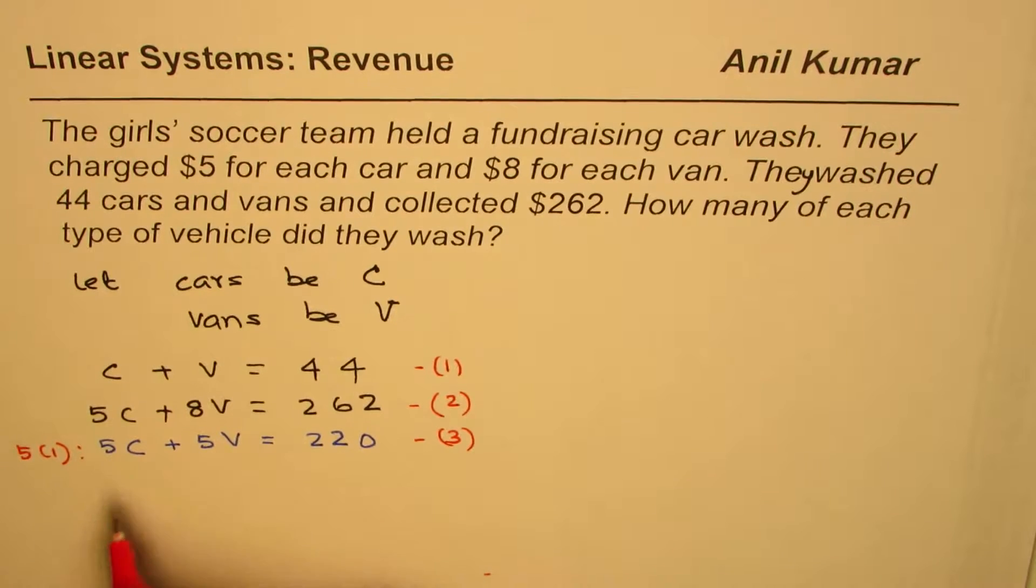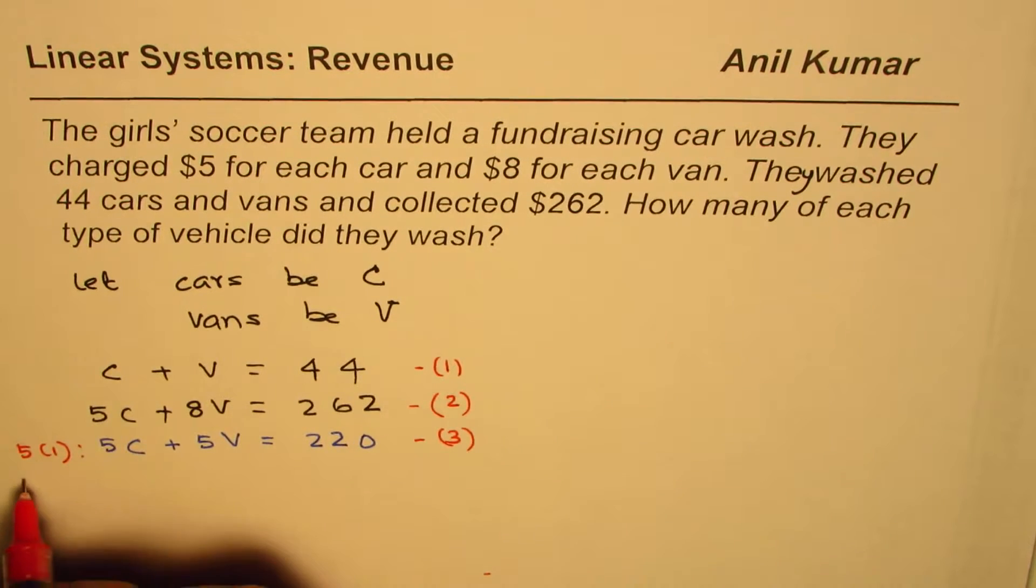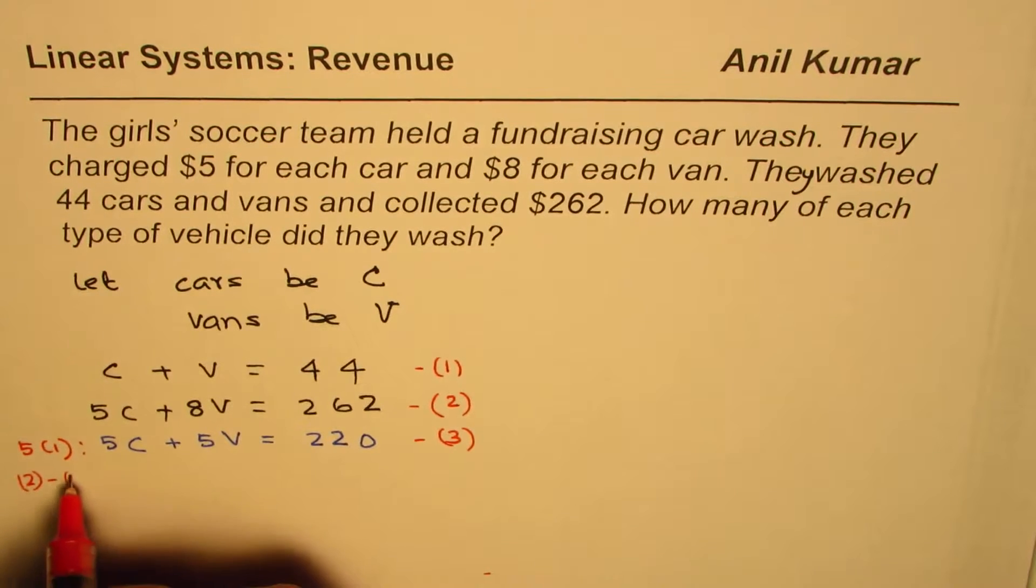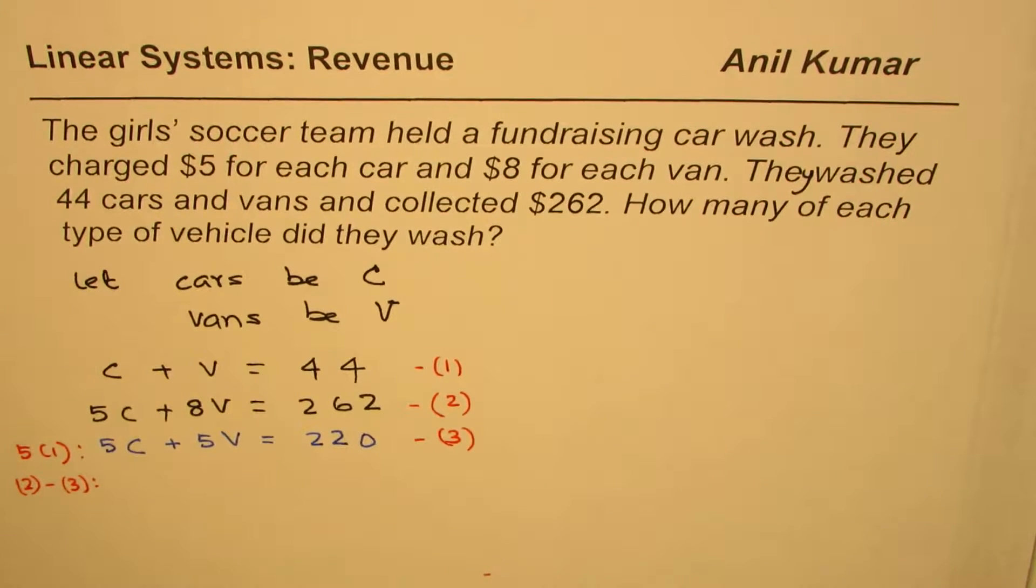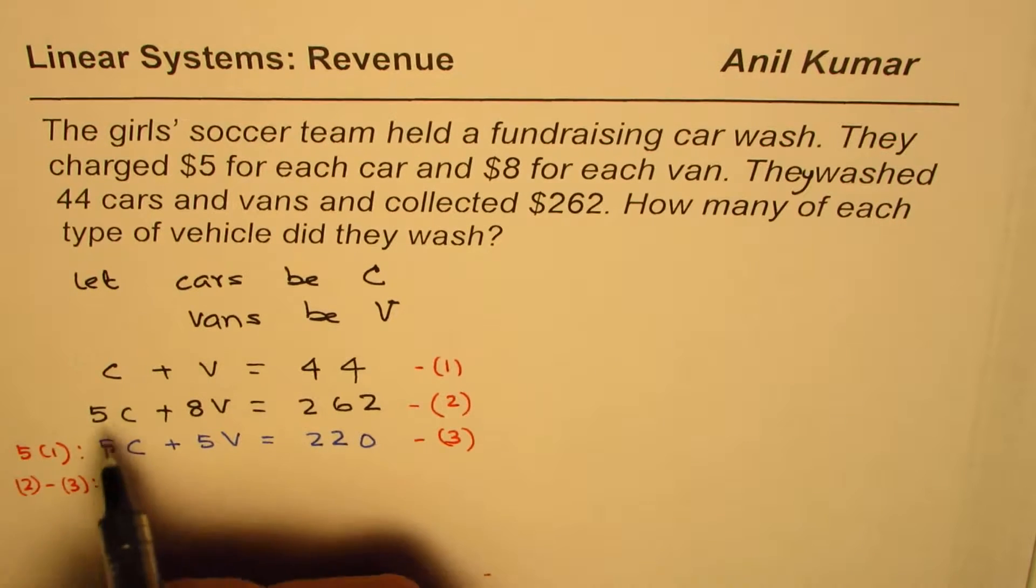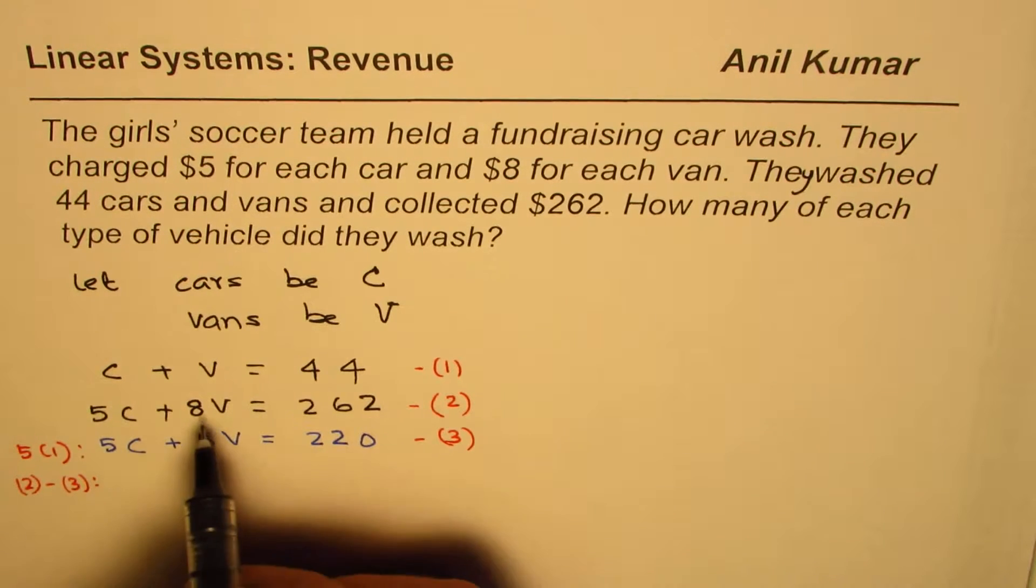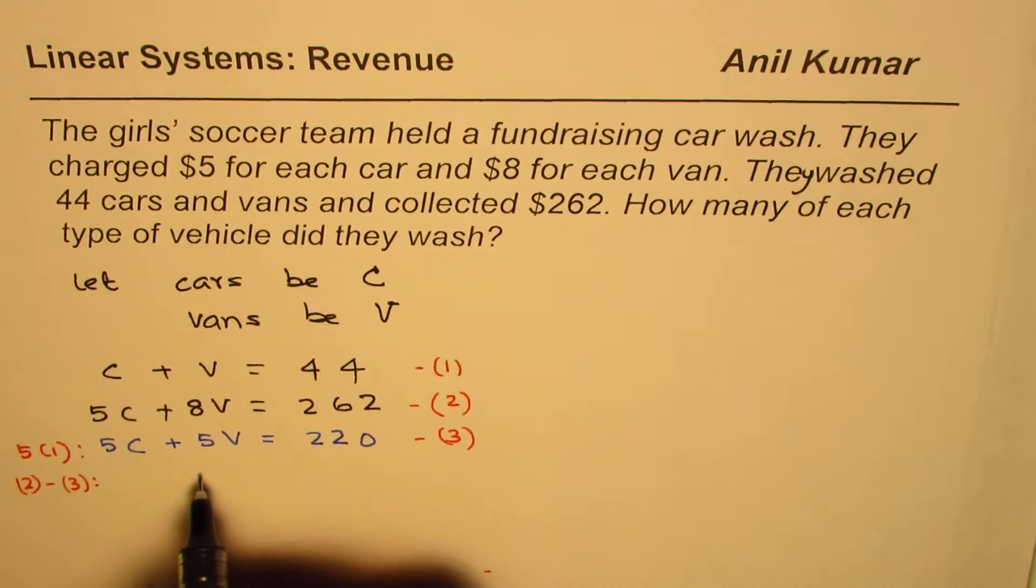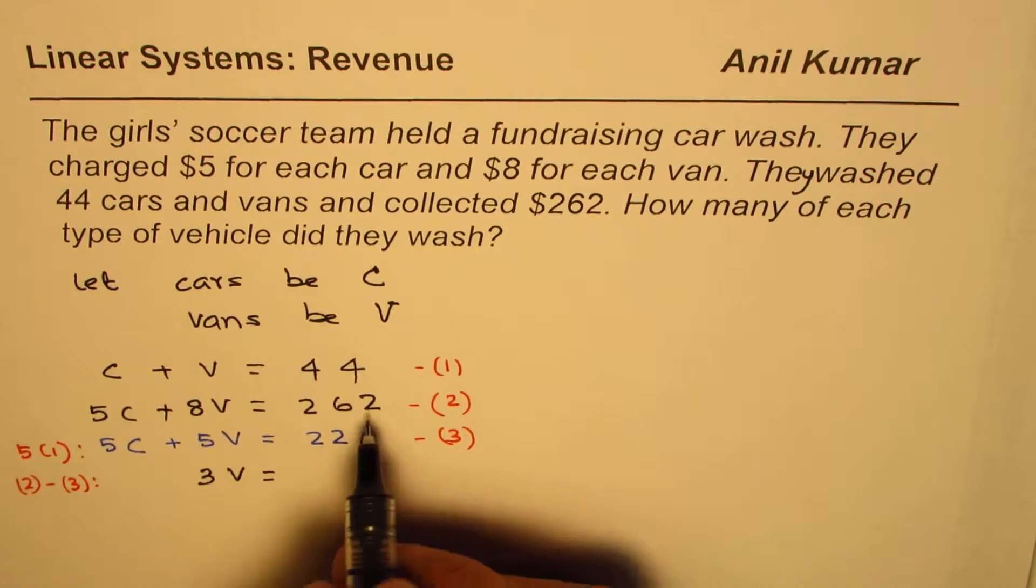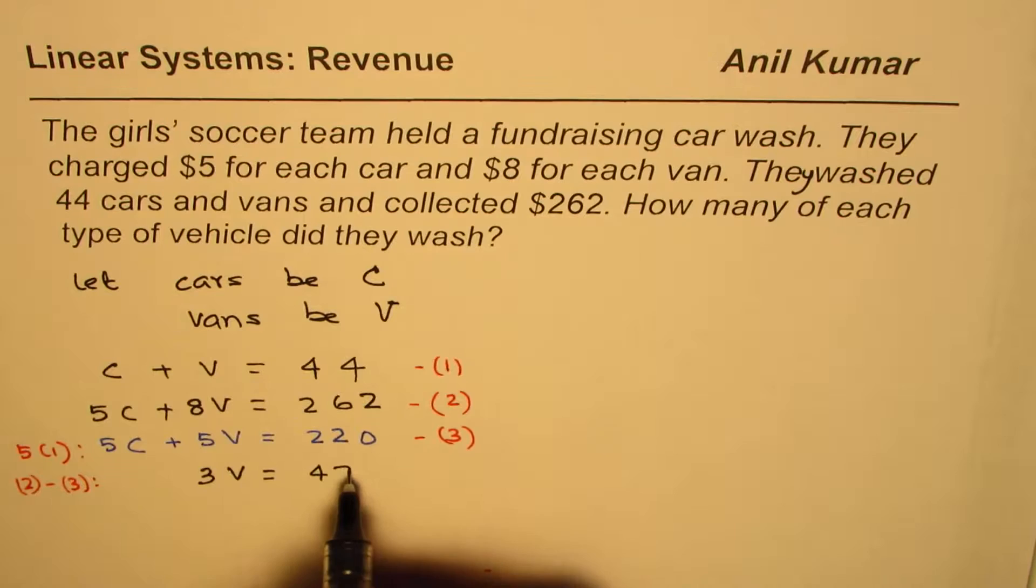Now we can eliminate by subtracting one equation from the other. Equation 2 minus equation 3 gives us 5C minus 5C equals 0, and 8V minus 5V equals 3V. So we get 3V equals 42.